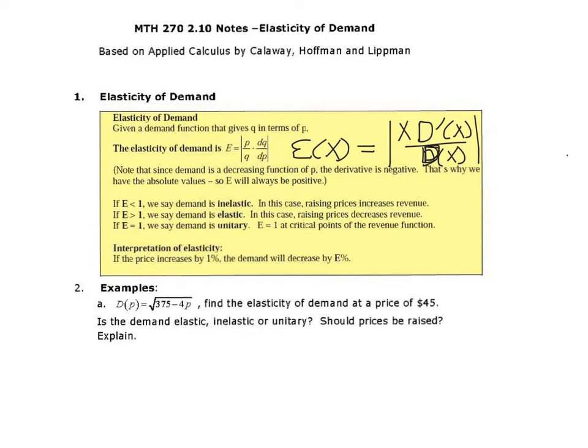So if e is less than 1, like after we compute this thing in the absolute value, if it's less than 1, the demand is inelastic. In this case, raising prices will increase revenue. That's good. If e is greater than 1, then demand is elastic. In this case, raising prices decreases revenue. So probably not what we want to do. And if e is exactly 1, then we say demand is unitary. That equals 1 at critical points of the revenue function. And interpretation of elasticity: if the price increases by 1%, the demand will increase by e%.